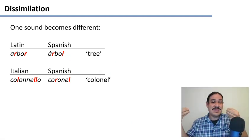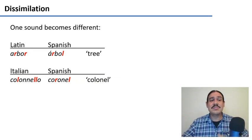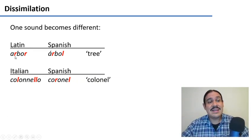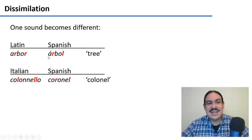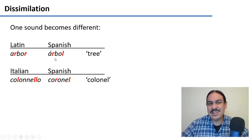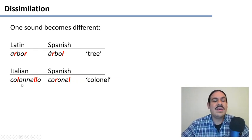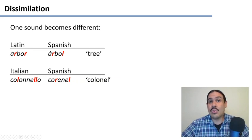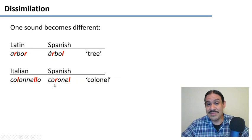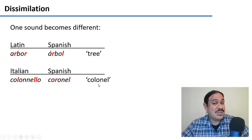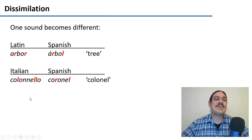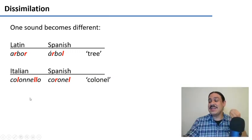Assimilation makes sounds more similar. Dissimilation makes sounds different, probably to avoid tripping on your tongue. In Latin, we had 'arbor' with two R's, but Spanish changed one of the R's — 'árbol' — to make it easier to say. In Italian we have 'colonel', and in Spanish we have 'coronel', where the first L was changed into an R. Notice that English took the spelling but says 'coronel'.